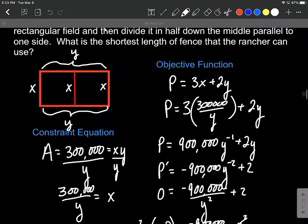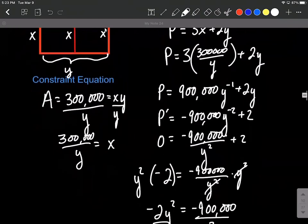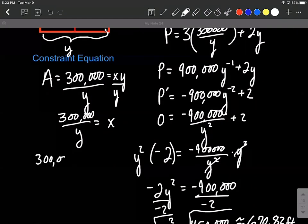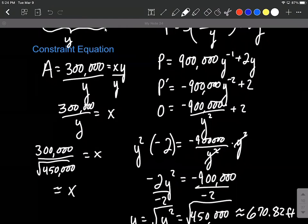And now we want to find a value for x. So I'm going to take that value back up to our constraint equation. And we can get a value for x by going 300,000 divided by that value for y was the square root of 450,000 is going to be our exact x value, which works out to be approximately 447.21 feet.